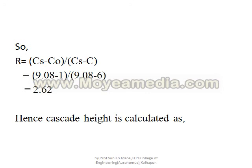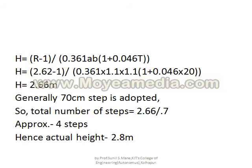Next, we calculate H using the formula. Substituting R = 2.62, A = 1.1, B = 1.1, and T = 20°C: H = (2.62 − 1) / (0.362 × 1.1 × 1.1 × (1 + 0.046 × 20)). H comes out to be 2.66 meters. A standard step height of 70 cm is adopted, giving approximately 4 steps, which means the actual total height is 2.8 meters.